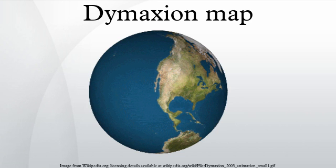More unusually, the Dimitian map does not have any right way up. Fuller argued that in the universe there is no up and down, or north and south — only in and out. Gravitational forces of the stars and planets created in, meaning towards the gravitational center, and out, meaning away from the gravitational center. He attributed the north-up-superior-south-down-inferior presentation of most other world maps to cultural bias.